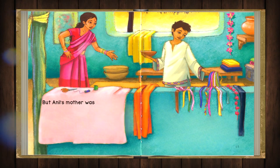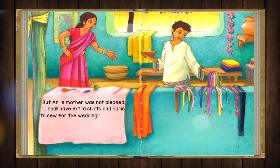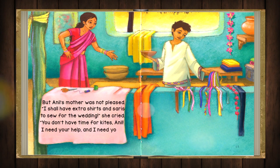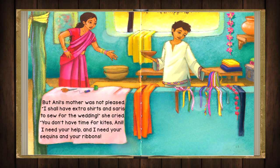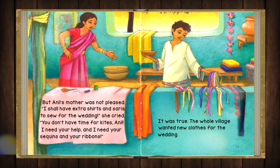But Anil's mother was not pleased. 'I shall have extra shirts and saris to sew for the wedding,' she cried. 'You don't have time for kites, Anil. I need your help and I need your sequins and your ribbons.' It was true. The whole village wanted new clothes for the wedding.